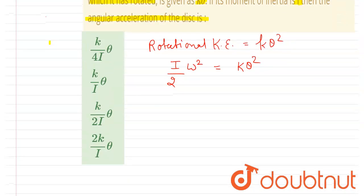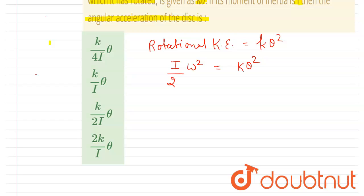This. So differentiating both sides with respect to t, I will get I by 2, times 2 omega, d omega by dt, which equals k, 2 theta, d theta by dt.